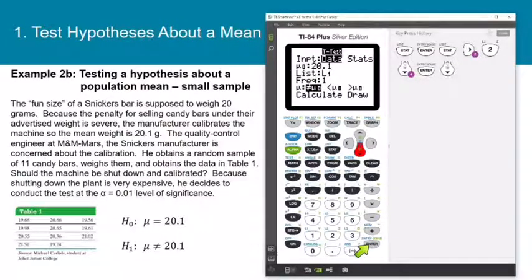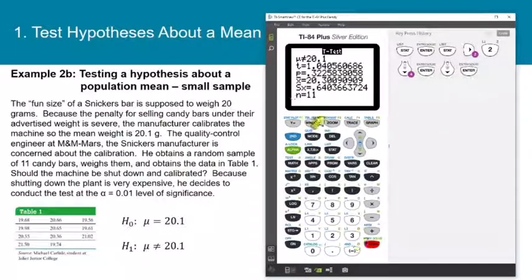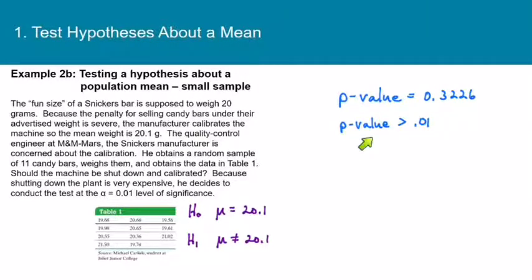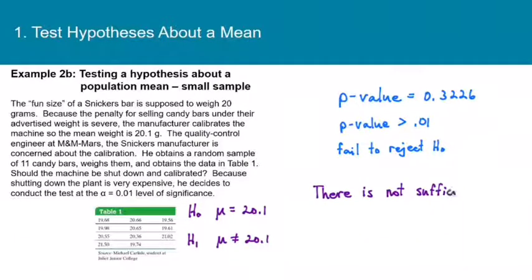Press enter on calculate. The p-value is 0.3226. Comparing to alpha, the p-value is much larger than alpha. Therefore we fail to reject H-naught. There is not sufficient evidence to conclude that the mean weight is different from 20.1 grams.